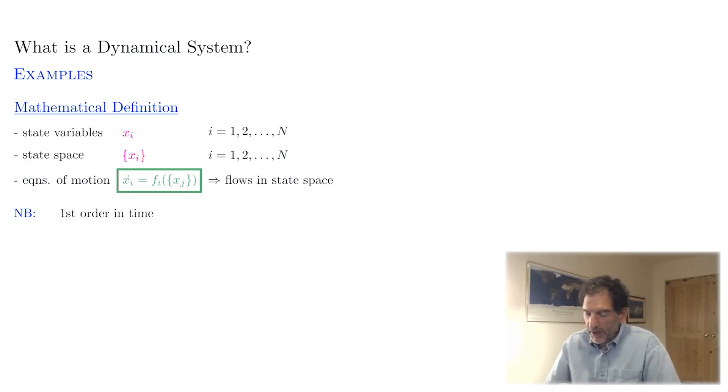So for example, the rock in a gravitational field, we might think of that as a second order system because it's Newton's law, but it can be reduced to a first order system. For example, if we had an equation of motion x double dot, two time derivatives, is equal to some function g of x.